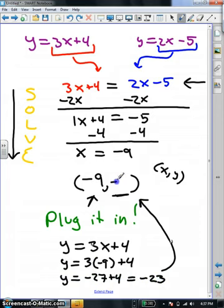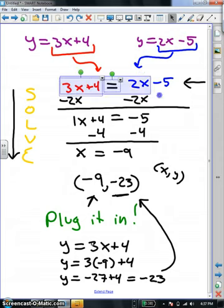That is our y value. So to summarize, the substitution method says take the mx plus b value from one equation, take the mx plus b value from another equation, and set them equal. Make a new equation out of it. Once you have your new equation, solve it.